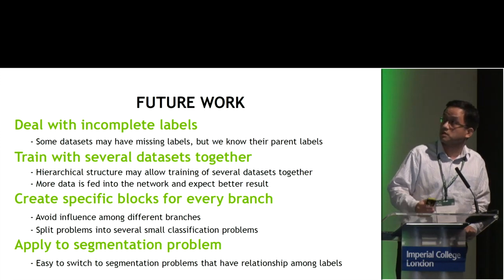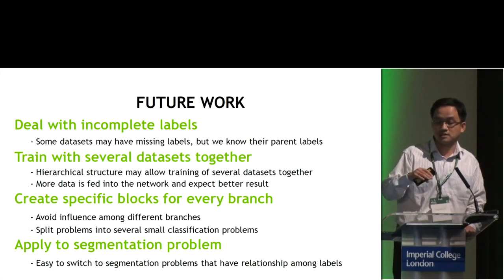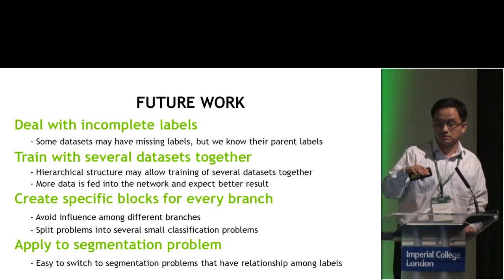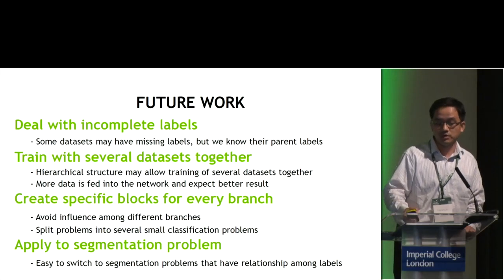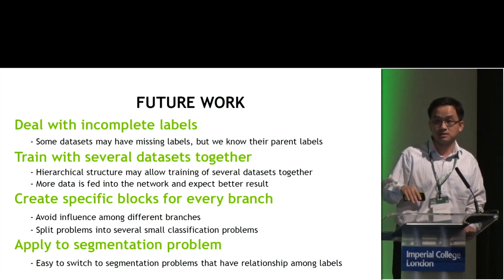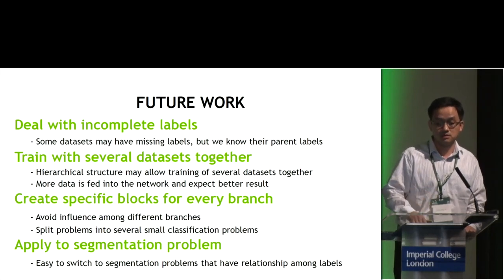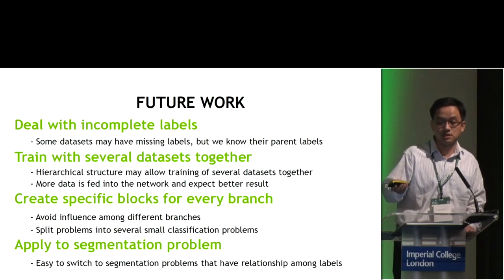For future work, we want to deal with incomplete labels — right now we deleted images with incomplete labels. Second, we want to train with several datasets together, even though their annotations are not fully accurate. Third, we want to create specific blocks for every branch, since right now all diseases share one backbone network. Finally, we want to apply this approach to segmentation problems, which should be quite intuitive by extending the disease tree structure.